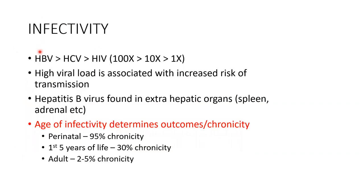The entire infectivity of hepatitis B depends upon the age of infectivity. Comparing hepatitis B, hepatitis C, and HIV — the rate of infectivity is about 10 times compared to HCV and higher than HIV. Higher the viral load, higher is the risk of transmission. Hepatitis B virus has also been found not only in the liver but also in extra-hepatic organs like spleen and adrenals.